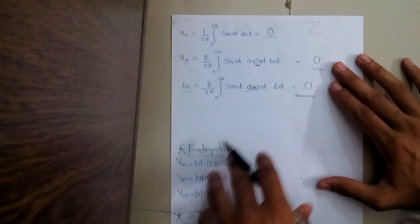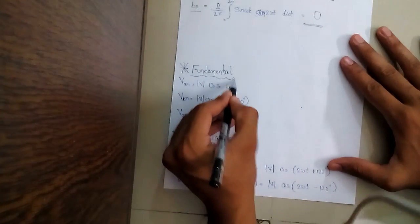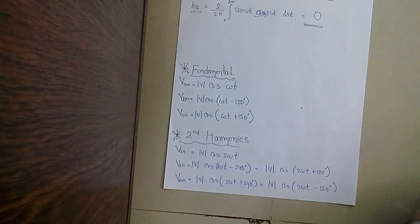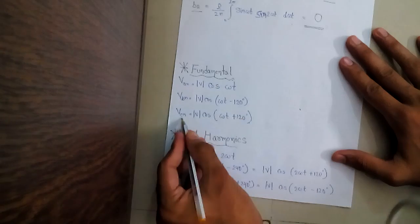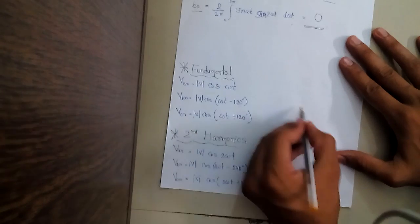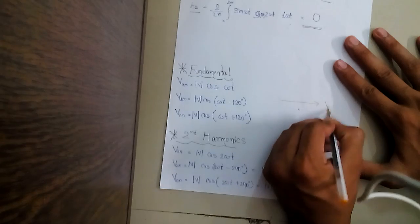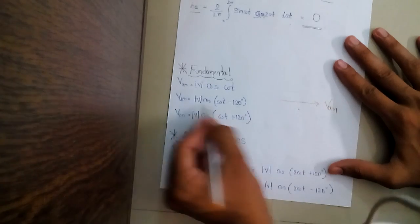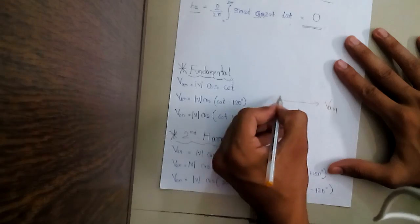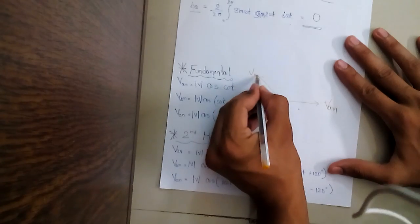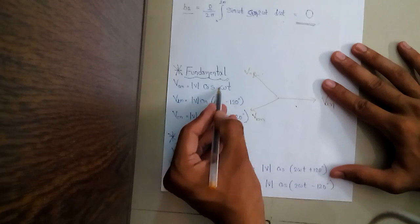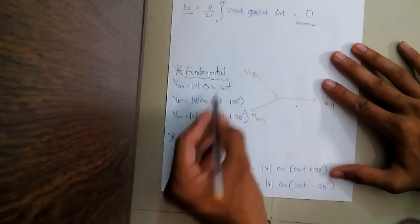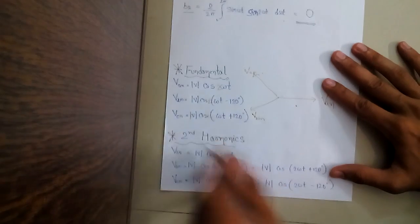Now the third explanation, which will be very useful. Suppose I have my fundamental waveform: V_An = V cos(ωt), V_Bn = V cos(ωt − 120°), V_Cn = V cos(ωt + 120°). So if this is my V_An, V_Bn is at −120° and V_Cn is at +120°. If I want to find out the second harmonics, I will multiply these angles by 2.